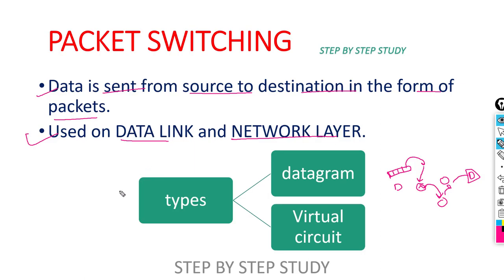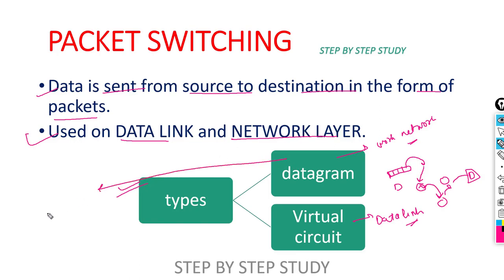There are two types of packet switching. One is datagram and the other is virtual circuit. Datagram switching works on the network layer, and virtual circuit works on the data link layer. Datagram is connectionless, while virtual circuit is connection-oriented. We already covered connectionless and connection-oriented concepts, but I will explain further with a diagram.